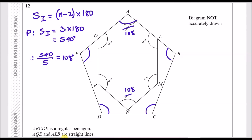Now we've got pretty much everything. We ask ourselves: for the hexagon, what should all the angles add up to? Using the sum of interior angles formula for a hexagon — six sides, so (6 minus 2) times 180, which is 4 times 180 — that gives us 720 degrees.